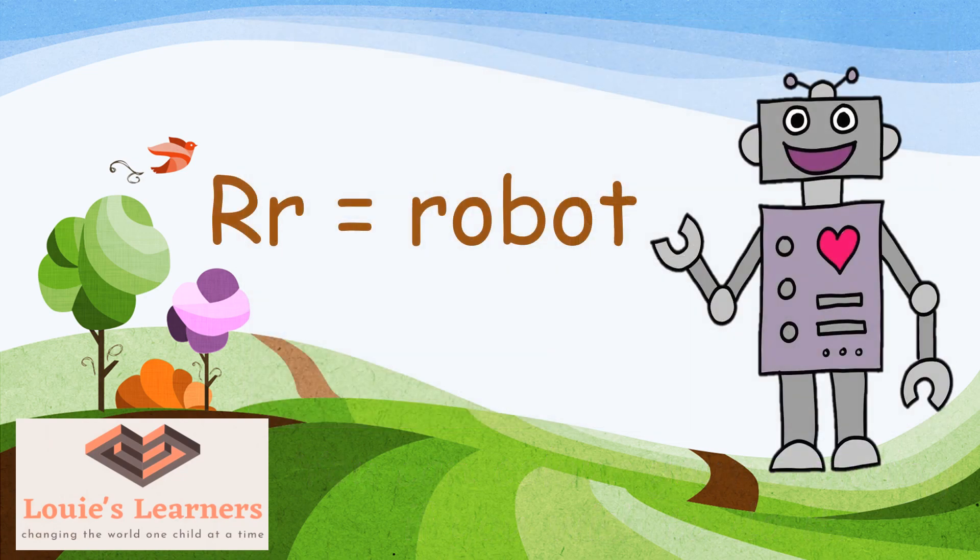Our keyword for the letter R is robot. R says R for robot. Again, R says R for robot.